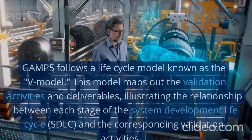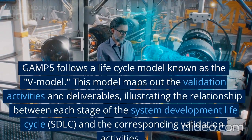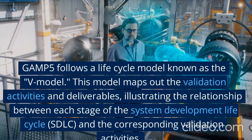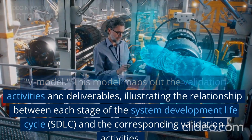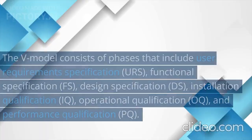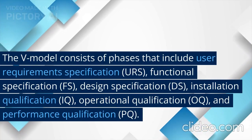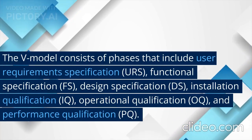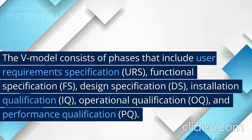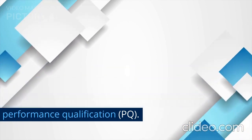Validation Lifecycle: GAMP5 follows a lifecycle model known as the V-Model. This model maps out the validation activities and deliverables, illustrating the relationship between each stage of the System Development Lifecycle (SDLC) and the corresponding validation activities. The V-Model consists of phases that include User Requirement Specification (URS), Functional Specification (FS), Design Specification (DS), Installation Qualification (IQ), Operational Qualification (OQ), and Performance Qualification (PQ).